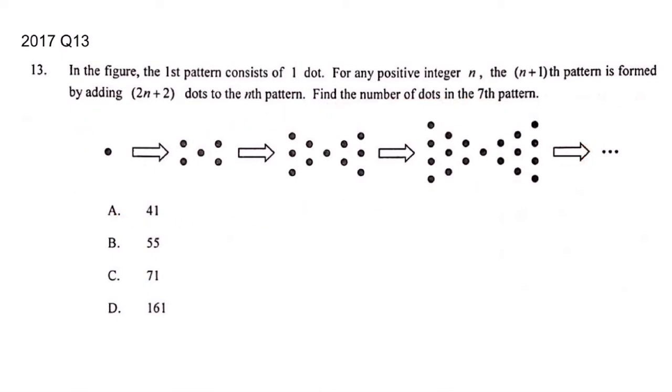It's about graph patterns and then you have to find the seventh pattern. We have patterns one, two, three, four - we just need three more, so it should be easy right? So let's see what's the pattern. The first pattern consists of one dot. How about the next one? Just count it: one, two, three, four, five.